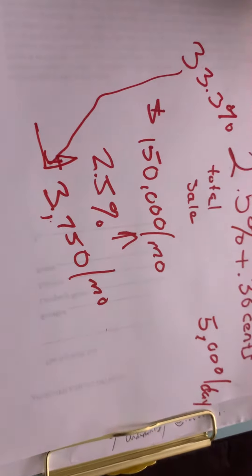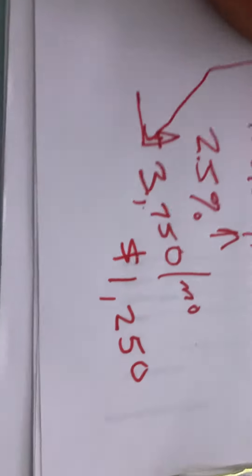That amount actually comes out to 33.3% of $3,750 is roughly $1,250.